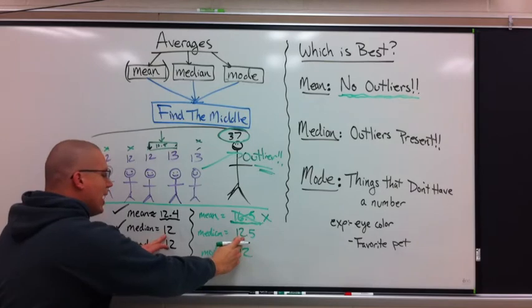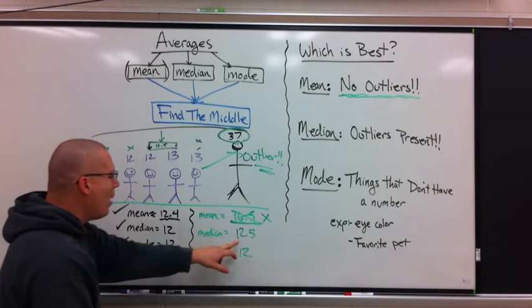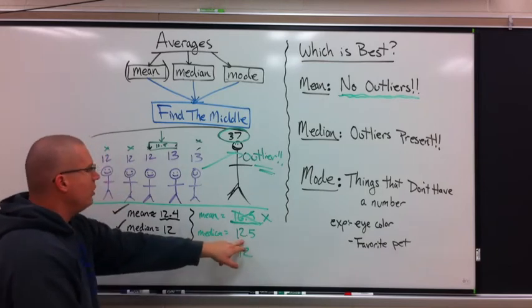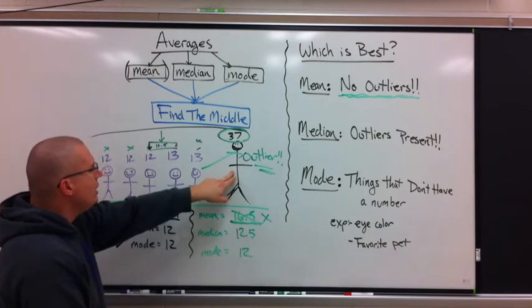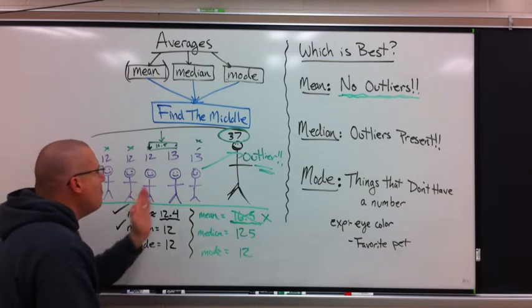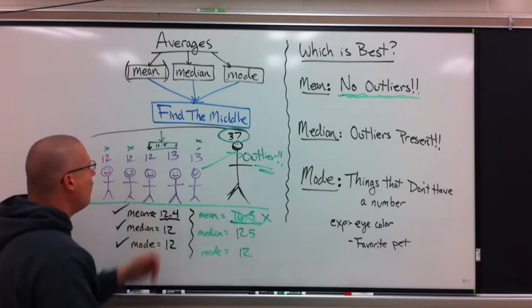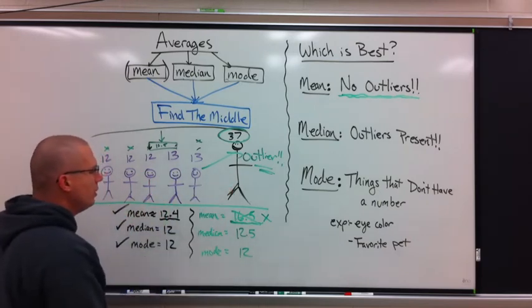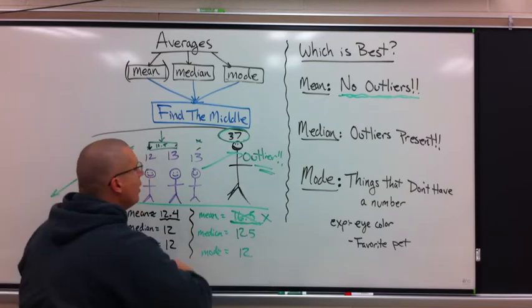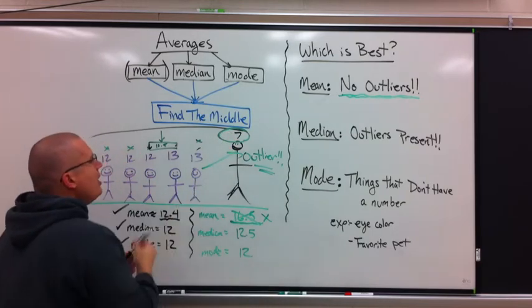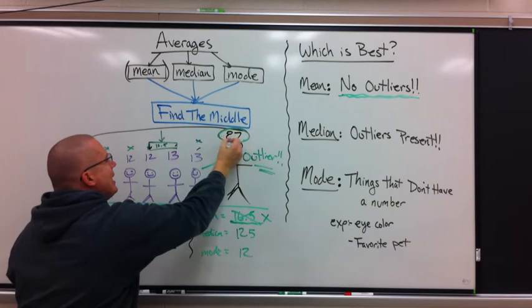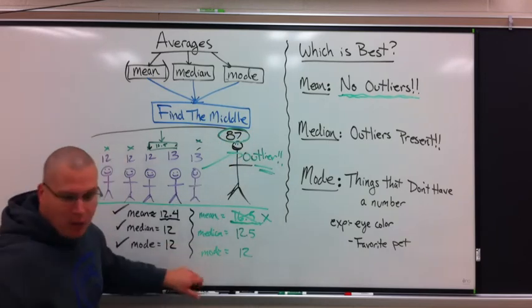Has the median changed very much? Look, it used to be 12, now it's 12.5. Did this number really change the median at all? It moved it one half space over because it was an extra number. Watch real quick. What if instead of 37, I was 87?